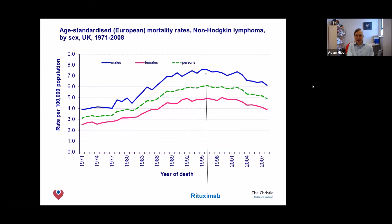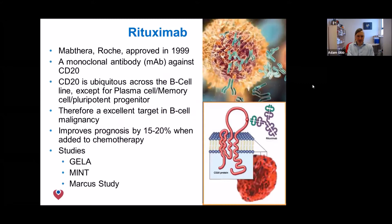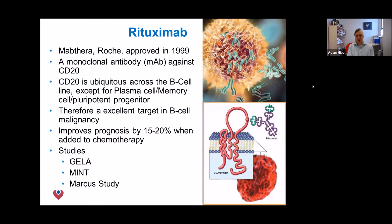Rituximab was an absolute game changer in the treatment of diffuse large B-cell lymphoma. It was one of the first drugs in cancer care that was not a classic chemotherapy — instead it was an antibody treatment. Rather than targeting bugs, it targets the CD20 molecule on the surface of a lymphoma cell, flagging that cell for immune destruction. Adding rituximab to chemotherapy improves outcomes by about 15 to 20 percent, as demonstrated in major trials in the 1990s.